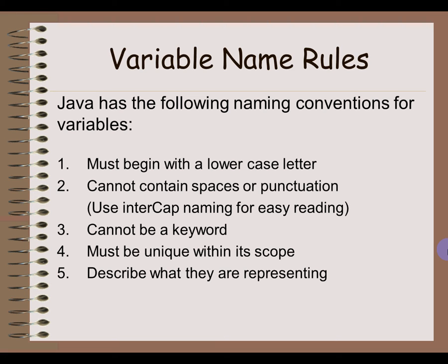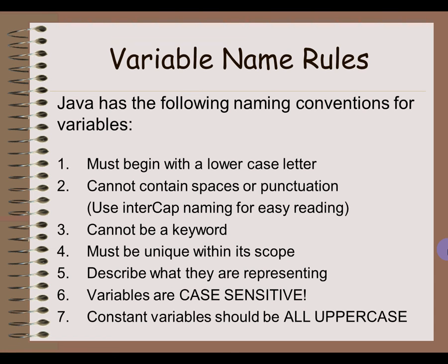Fifth, variable names should be descriptive of the information they're storing — don't create variable names like x, y, z, a, b, c just because you're lazy. If you have 15 variables with random names that don't make sense, you won't know what represents what. Sixth, be careful because variables are case sensitive. Seventh, if a variable is never going to change its value throughout the entire life of your program, put it in all uppercase — for example, pi should be written PI in all caps, because its value will never change.